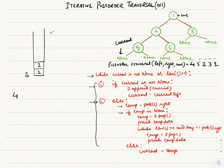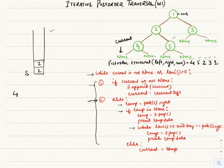We now need to check whether 4 is the right child of node 2. We use a while condition to check whether the element we popped is the right child of the new top of the stack. Since 2's right is not equal to 4, we do not pop 2 — we still have the right side of node 2 to explore.